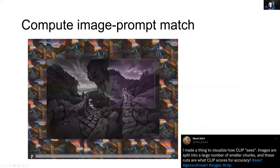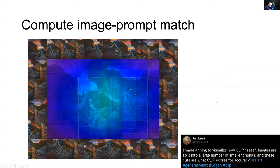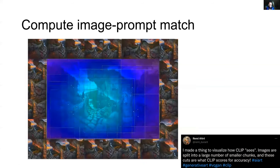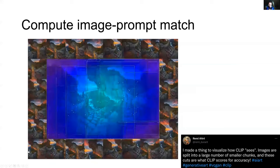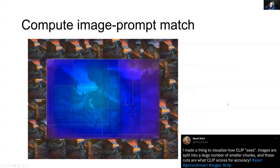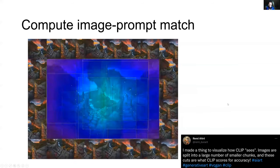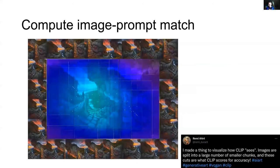You can visualize this process pretty neatly. Here's something made by Remy Durand on Twitter. The green boxes are the cutouts being sent to CLIP, and the color encoding shows how often a part of the image is sent to CLIP. The center of the image is covered more frequently, which is pretty cool.